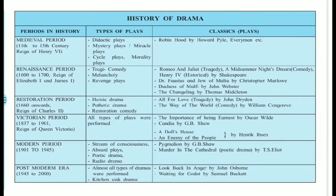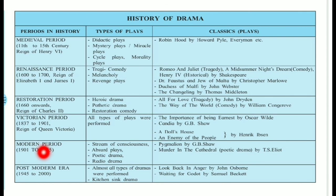Remember the six important periods in the history of English drama: Medieval, Renaissance, Restoration, Victorian, Modern, and Postmodern. To remember the sequence, use the acronym M-R-R-V-M-P: M for Medieval, R for Renaissance, R for Restoration, V for Victorian, M for Modern, and P for Postmodern.